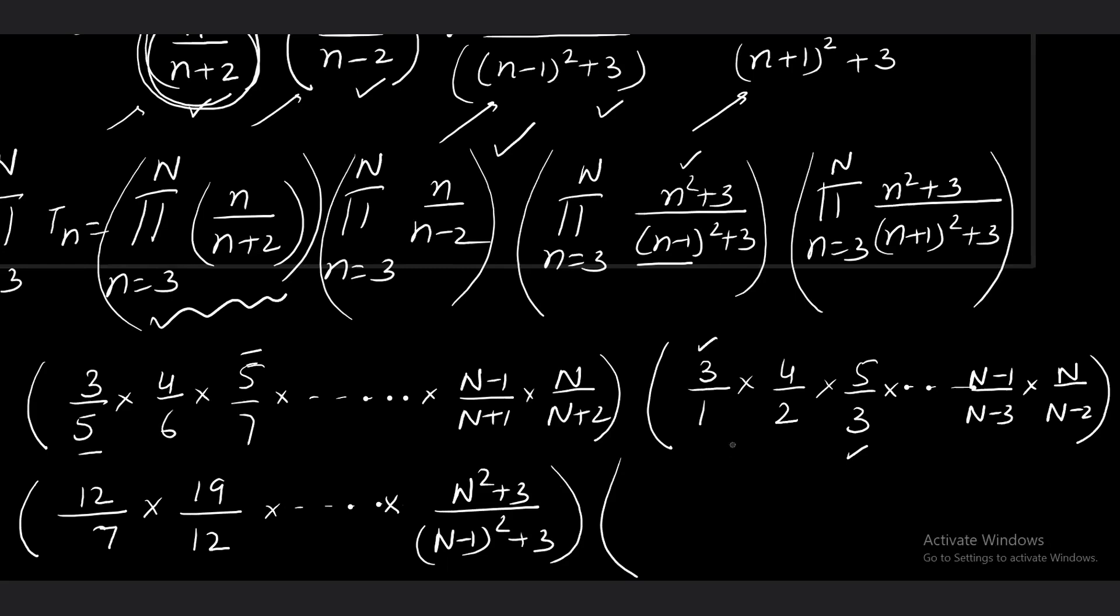The last bracket starts with n = 3. So 3² + 3 = 12, denominator (3 + 1)² = 16 + 3 = 19. Now keep n = 4. It becomes 4² + 3 = 19, upon 5² + 3 = 28. Second term onwards terms cancel. So I am going directly to the nth term.